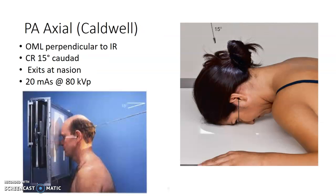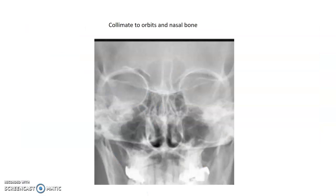The PA Caldwell — you guys know how to do a Caldwell. OML perpendicular, 15-degree caudal angle, exit at the nasion. Again, collimate please. I do not want the entire skull on this one. This is for nasal bones only.